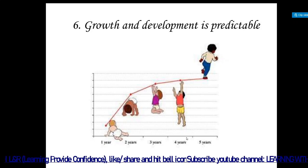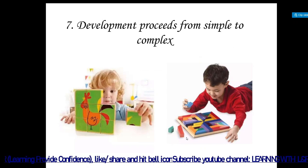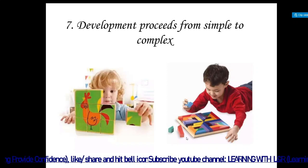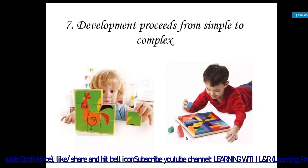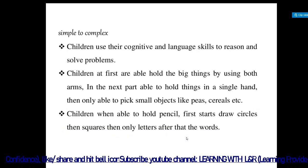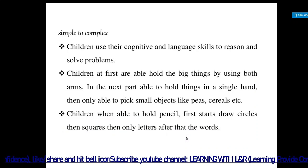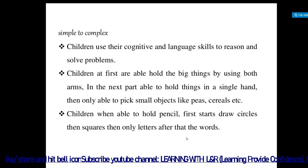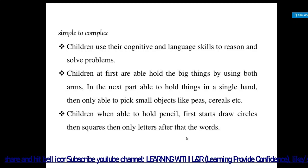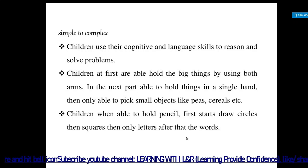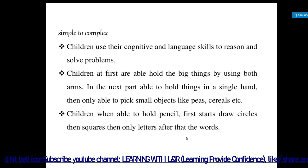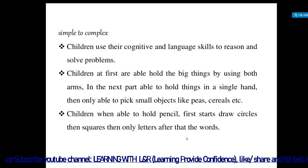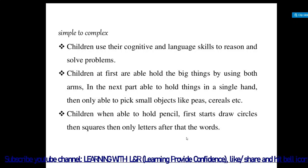Development also proceeds from simple to complex — the child first tackles simple tasks and then progresses to complex ones. Children use their cognitive and language skills to reason and solve problems. At first children are able to hold big things using both arms; next they can hold things in a single hand; and then they become able to pick up small objects like peas and cereals.